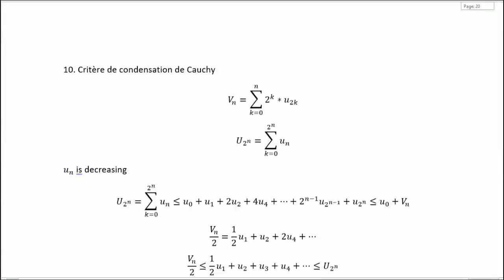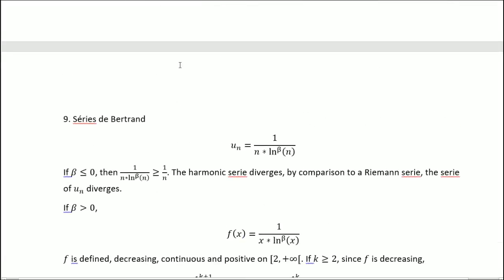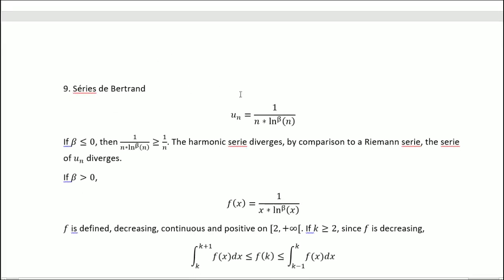Scrolling down, number 9, série de Bertrand. So I call u of n, the sequence, 1 over n times ln to the power beta of n.